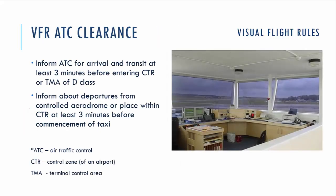Let's switch to ATC clearance. The basic rules relate to how you have to inform air traffic control units about your arrival or transition through controlled zones. First of all, you have to inform the ATC unit of your arrival or transit at least 3 minutes before entering CTR or TMA boundary in D-Class. You also have to inform ATC when departing from a controlled aerodrome at least 3 minutes before commencing taxi.